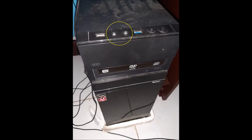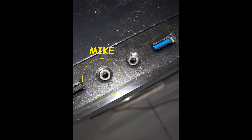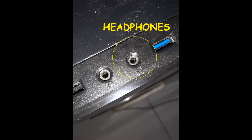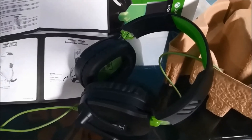On some PCs there is another port at the top or at the front. In this case they have no colors, but they have symbols. One has the symbol of a mic and is obviously for microphones. The other has the symbol of headphones, and you can plug your headphones or speakers in there. Give a thumbs up, leave a comment, and subscribe for more!